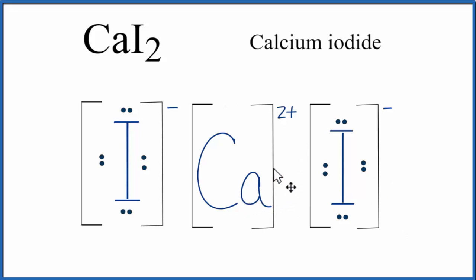We need the brackets to show that the calcium lost those valence electrons and they were gained by the iodine atoms. So the brackets show that the electrons aren't shared like in a covalent bond.